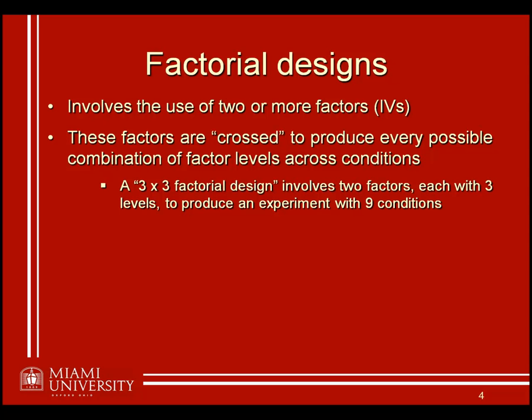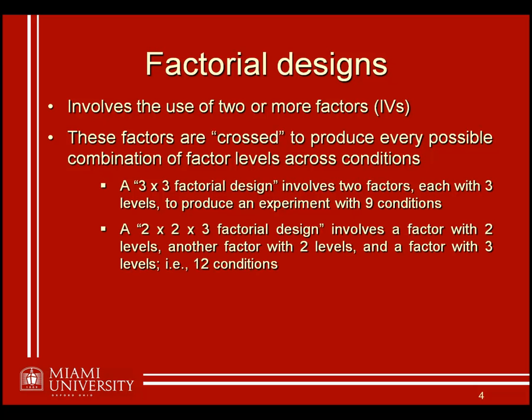We can use this notation to describe any design with multiple independent variables, each having multiple levels. For instance, a 2 by 2 by 3 factorial design has three numbers, meaning three factors: one factor with two levels, another with two levels, and another with three levels. We come up with every possible combination of the levels of each factor, giving us a total of 12 conditions in this design.